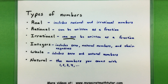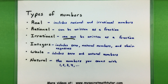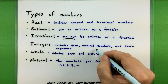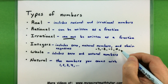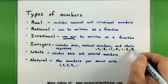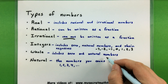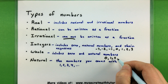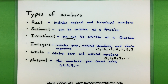For our integers, these include 0, the natural numbers, and their negatives. So you'll see numbers like negative 3, negative 2, negative 1, then 0, and the natural numbers. The whole numbers include 0 and the natural numbers. And of course our natural numbers are really just the numbers that you can count with — numbers like 1, 2, 3, 4, all the way up the line.